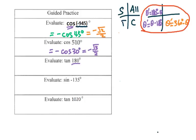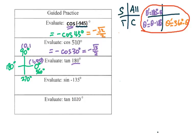For quadrantal angles, it's easier to just remember the coordinates. For 0°, 90°, 180°, 270°, and 360°, the coordinates are (1,0), (0,1), (-1,0), (0,-1), and back to (1,0). Notice that for sine and cosine at 0° and 180°, only the sign of the x-value changes from 1 to -1. For 90° and 270°, the y-value changes from 1 to -1. Tangent at 90° and 270° is undefined.